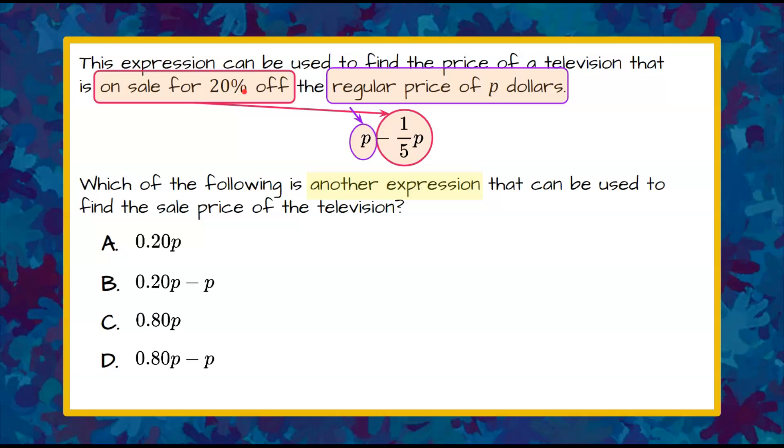20% off, written as a fraction, is subtracting 1 fifth. So 20% can be written as a fraction as 20 over 100, which simplifies to 1 fifth.